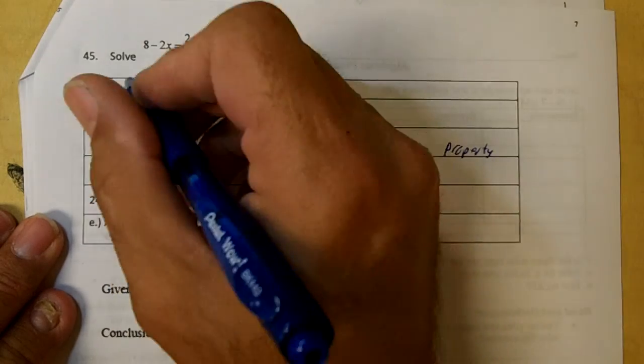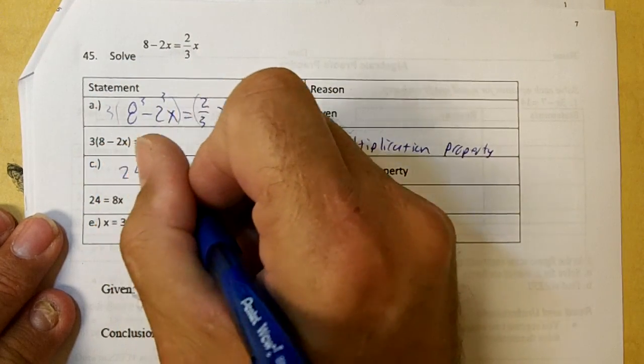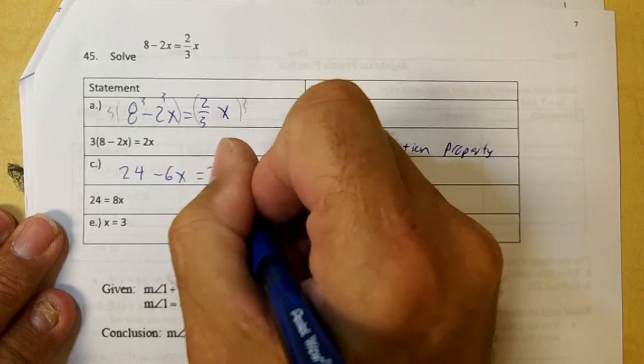Now you're going to do the distributive property. So you're going to distribute your 3. You'll get 24 minus 6x equals 2x.